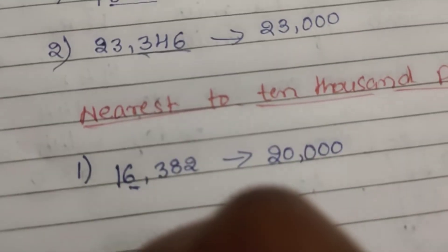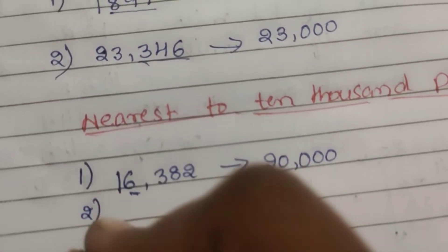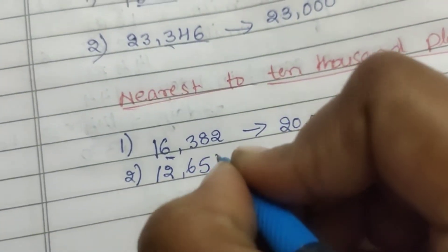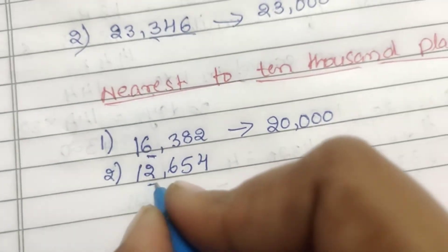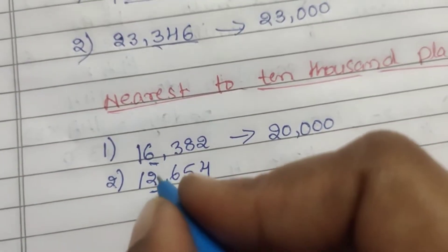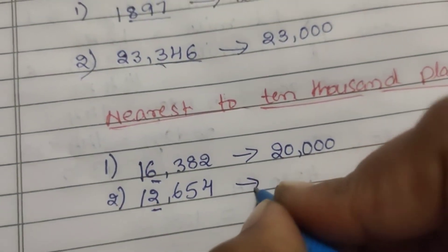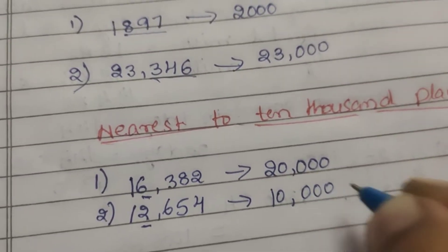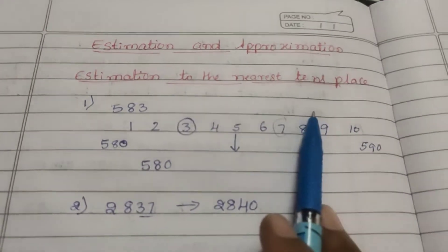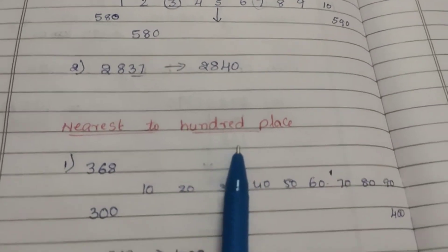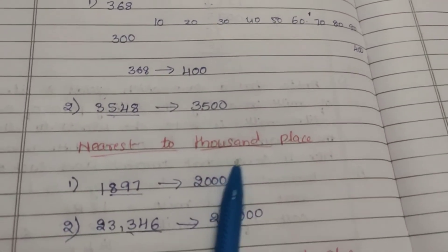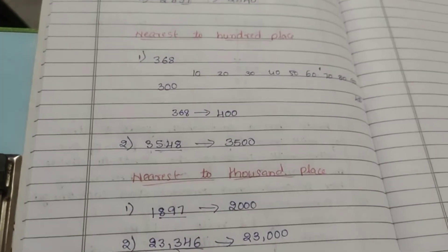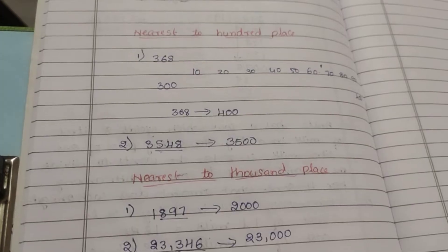16,382 — nearest to 10,000 place. 10,000 is near, 20,000 is near. 16,000 is closer to 20,000, so estimate is 20,000. Example 2: 12,654 — 10,000 is near. So this is nearest to 10s place, 100s place, 1000s place, 10,000 place. 4,000 is near. I will show you how to solve problems.